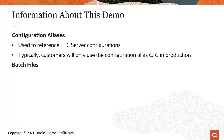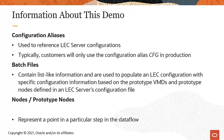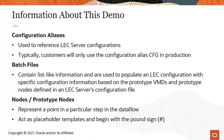I'll be loading an LEC server batch file. These files contain list-like information and are used to populate an LEC configuration with specific configuration information based on the prototype virtual manufacturing devices, or VMDs, and prototype nodes defined in a LEC server's configuration file. Nodes represent a point in a particular step of the data flow, and prototype nodes act as placeholder templates and begin with the pound sign.